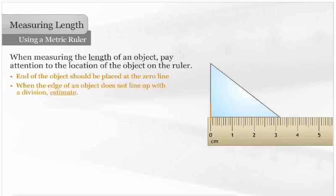When the edge of an object does not line up with a division, estimate. Measurements can be read to one-tenth of the smallest division, so this metric ruler can be read to one-hundredth of a centimeter.